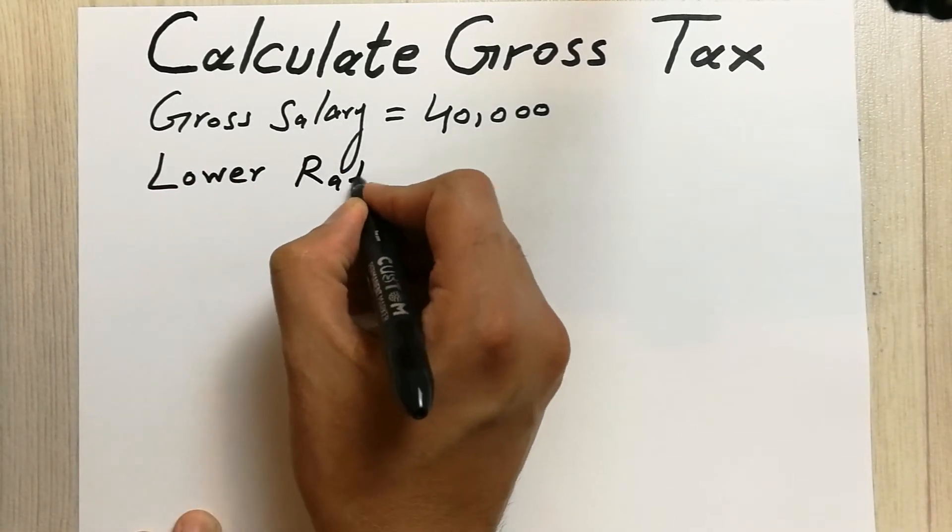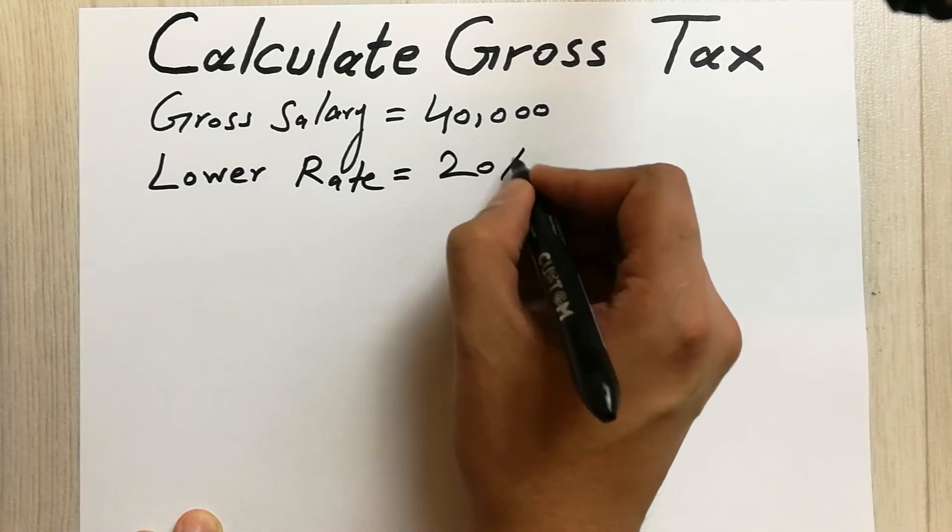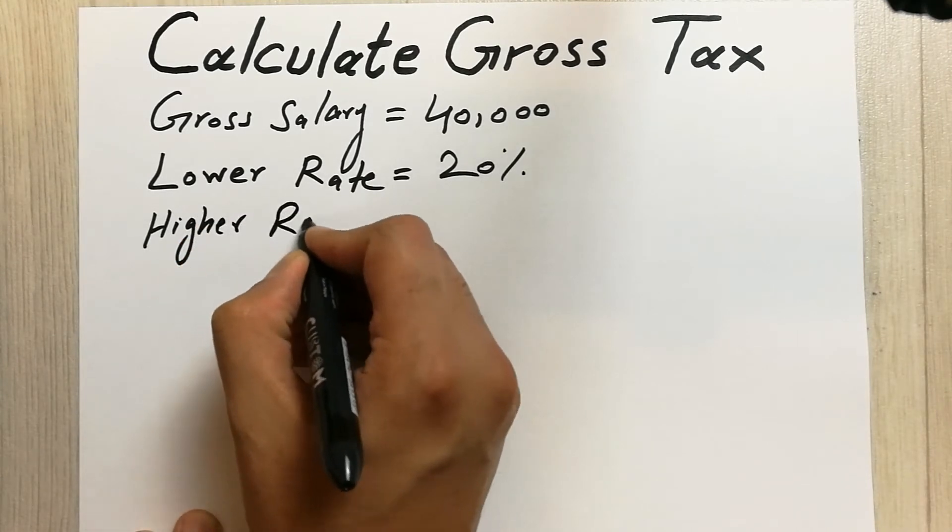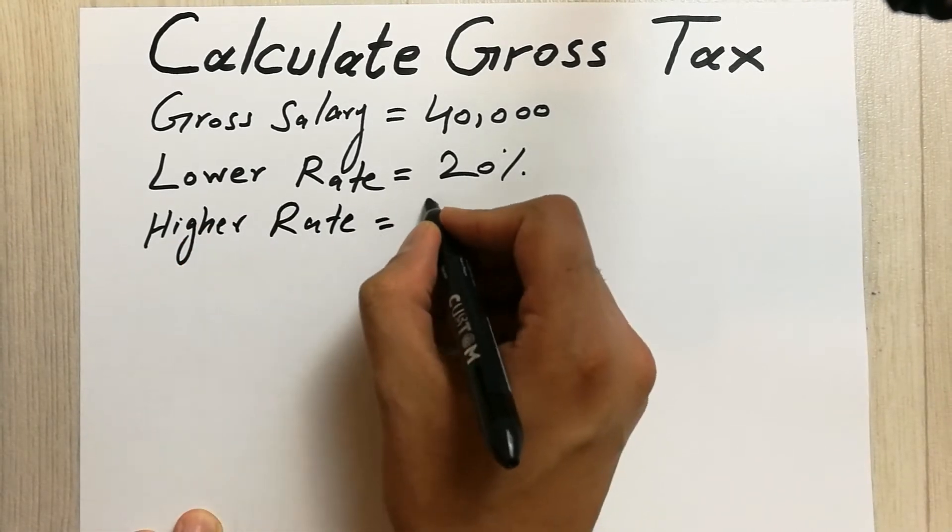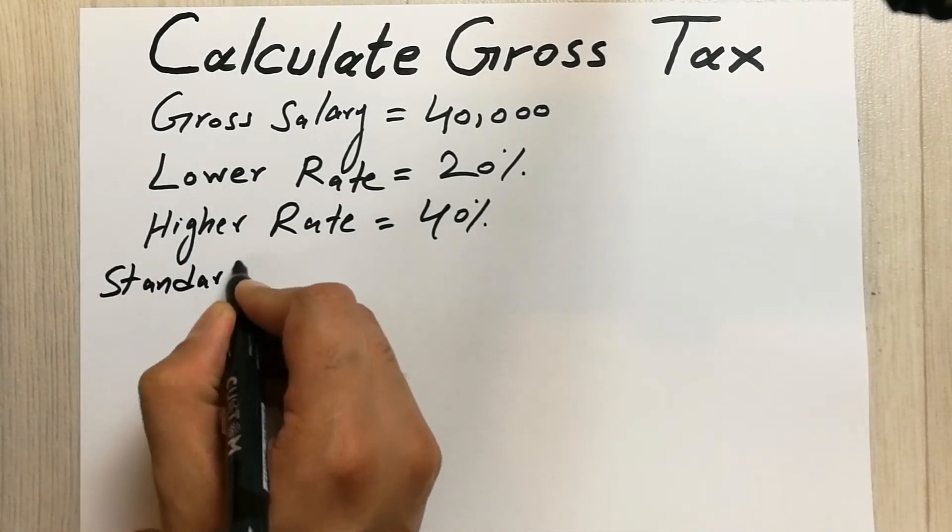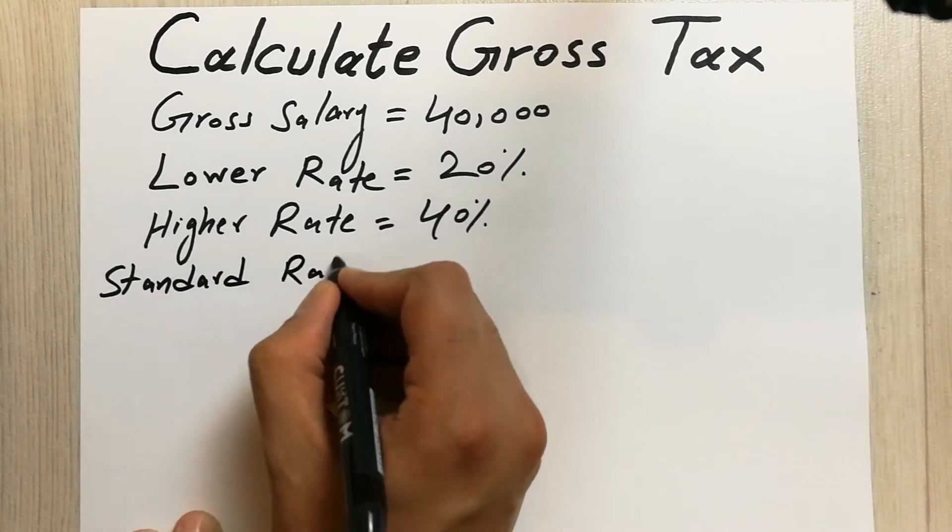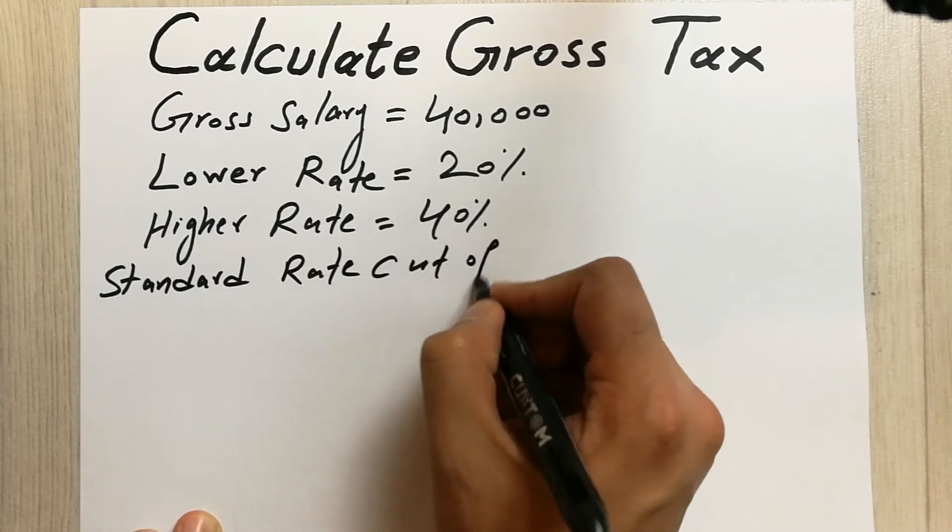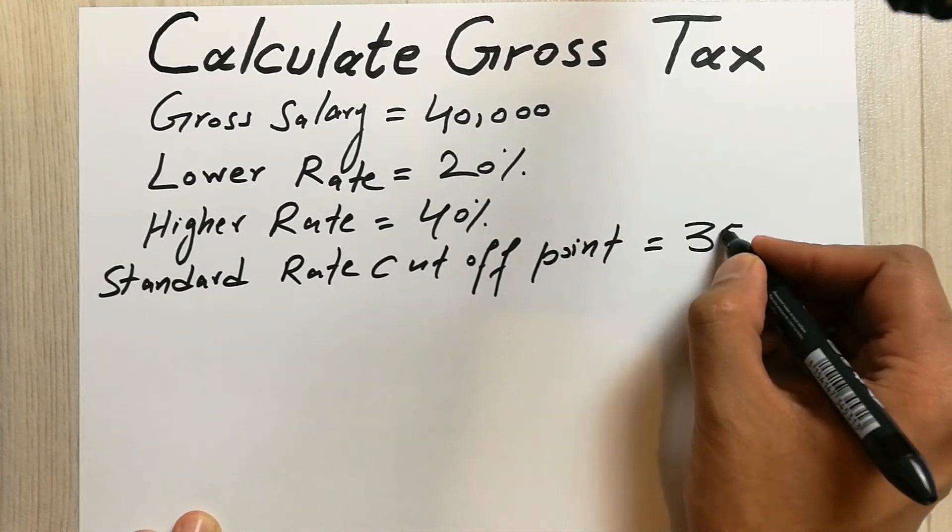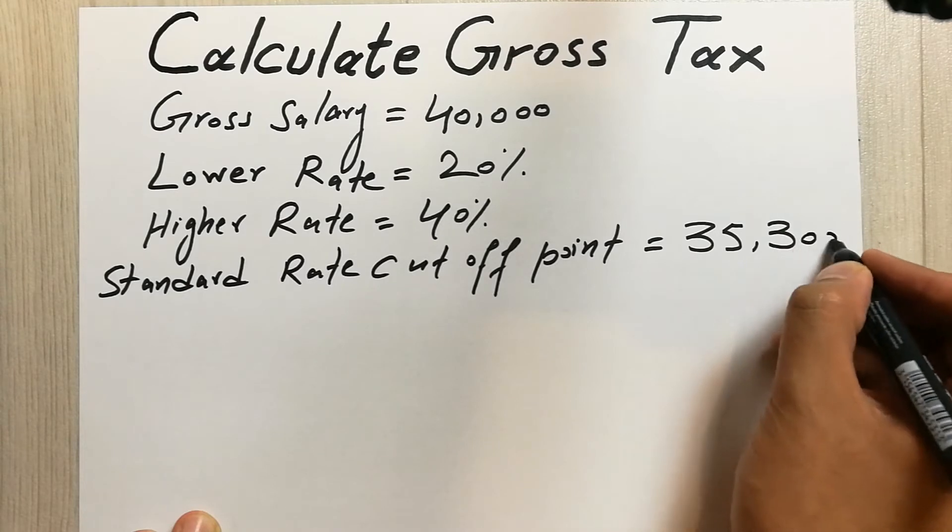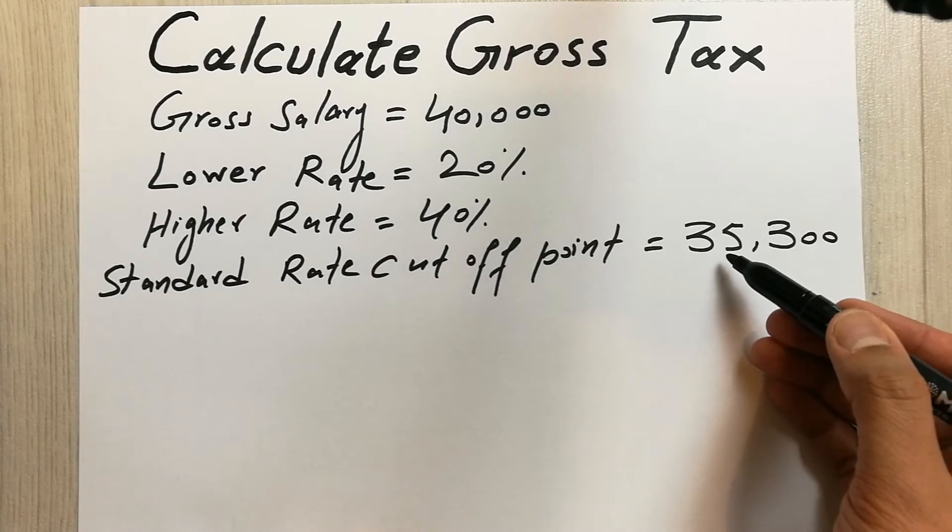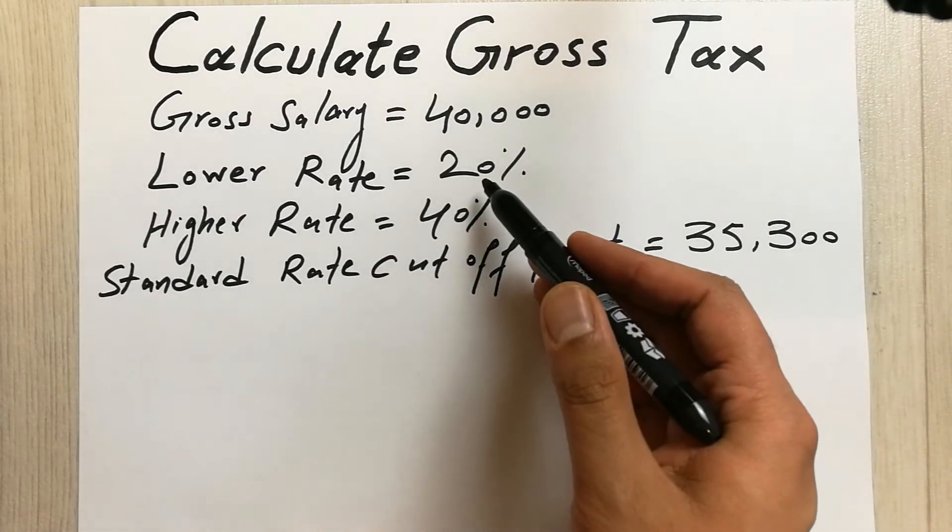is equal to 20% and the higher rate is equal to 40%. The standard rate cutoff point is equal to 35,300. So if your gross salary is below this point, then you will have the lower rate which is 20%.